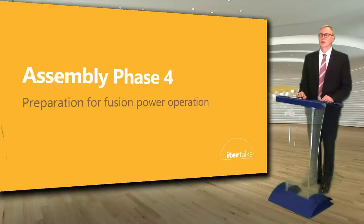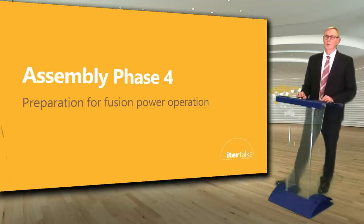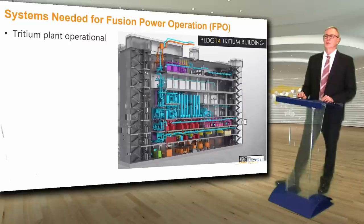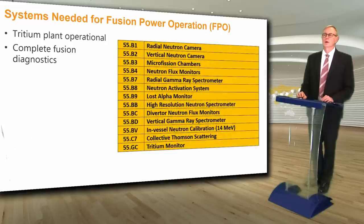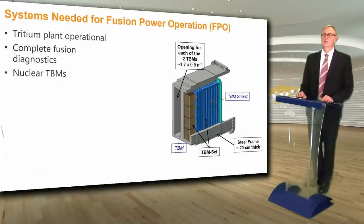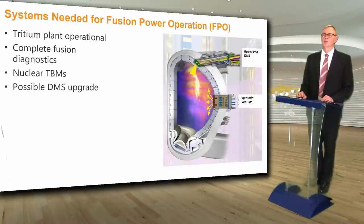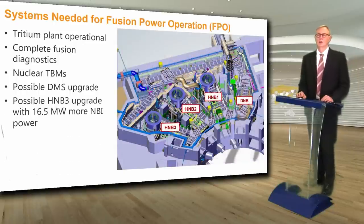Then we will have assembly phase 4 to make the final preparations for fusion power operation. The systems needed include having the tritium plant operational, the complete fusion diagnostics installed and ready, and the nuclear test blanket modules installed. We may also upgrade the disruption mitigation system and the neutral beam heating system with an additional 16.5 megawatts of heating power if needed.